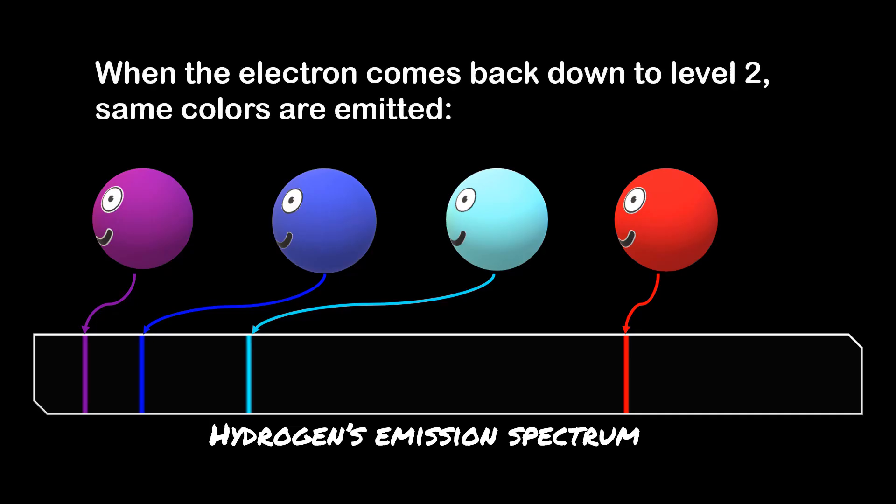When the electron comes back down, it emits the same energy, the same colour photon. This is how we get an emission spectrum.